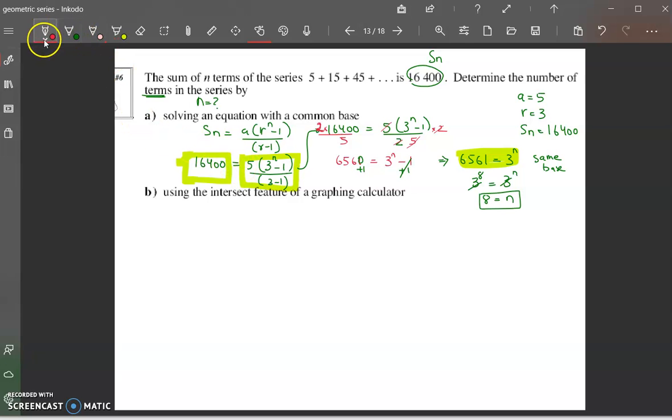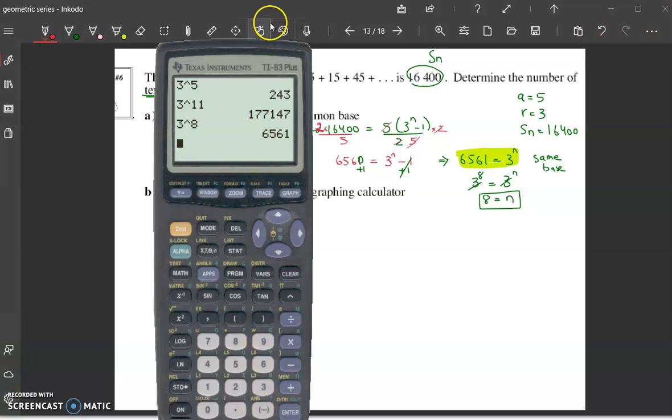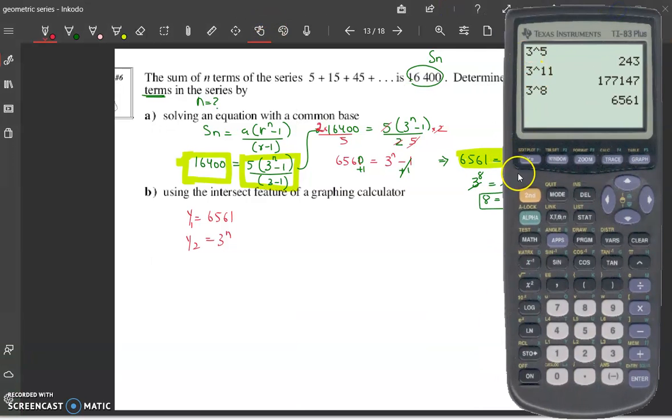So I am going to put y1 as 6561 and y2 as 3 to the n. So putting my 6561 and then putting the second one as 3 to the power of x.